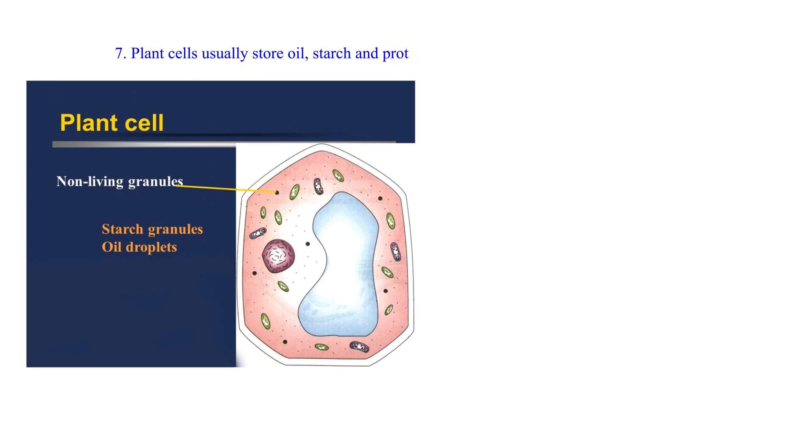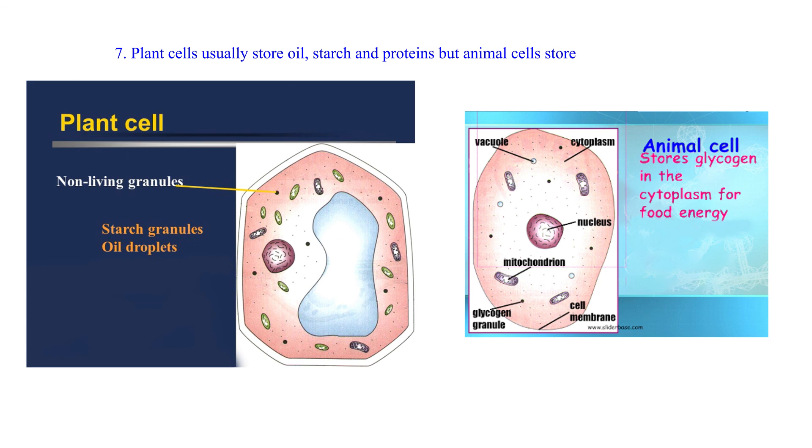7. Plant cells usually store oil, starch, and proteins but animal cells store glycogen and fats.